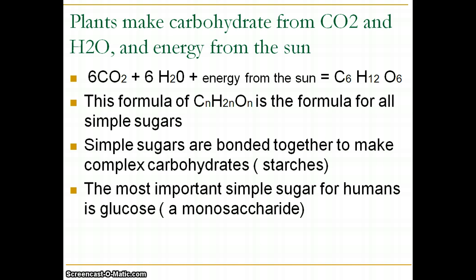Plants make their own carbohydrate in that manner. When they make C6H12O6, one of those is called a monosaccharide, two together is a disaccharide, and three or more make complex carbohydrates or polysaccharides. The most important simple sugar for humans is glucose — a monosaccharide — because it's what your brain, central nervous system, and red blood cells use for fuel.